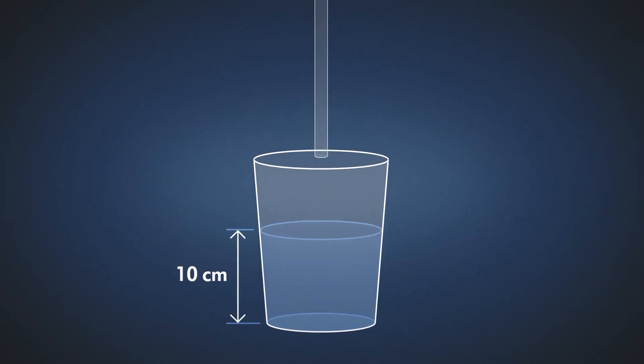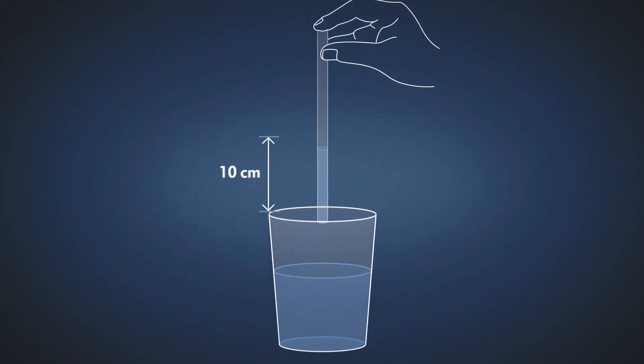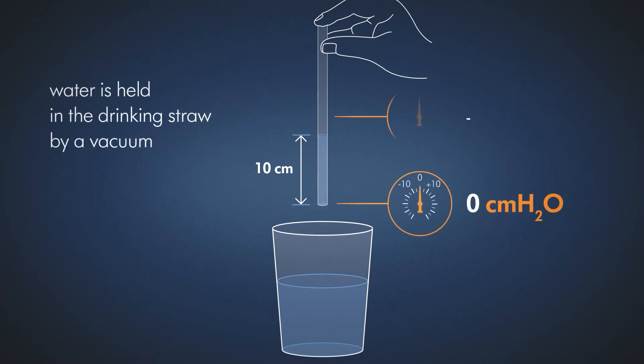If you put a drinking straw into the glass and then hold the upper end closed with a finger, you can lift the water in the drinking straw out of the glass. The water is held in the drinking straw by a vacuum, which also corresponds to the height of the liquid column.